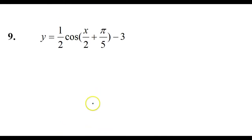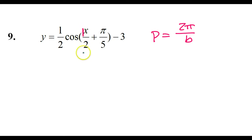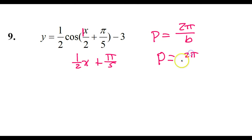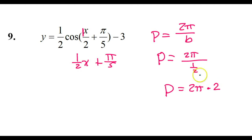Let's talk about the period. The period is found by doing 2π divided by the b value — whatever it is that's multiplying the x. I want you to imagine the invisible 1 that's right there, so this is like having (1/2)x + π/5. So 1/2 is the b value, and the period is going to be 2π divided by 1/2. When you divide by a fraction, you multiply by the reciprocal, so this is the same as 2π times 2. That's why the period is 4π.